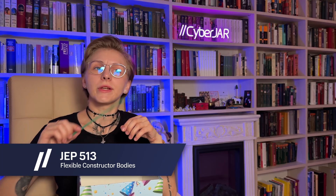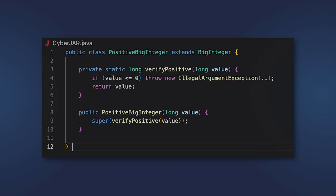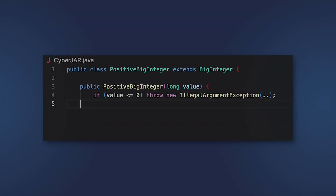Seasoned devs will also like this feature as they can write small programs without extra complications. Flex it before enjoying your drink — that's flexible constructor bodies. Finalized. With flexible constructor bodies, developers can initialize some fields or perform required computations in a constructor body before the super constructor invocation. No more boilerplate code in additional methods.